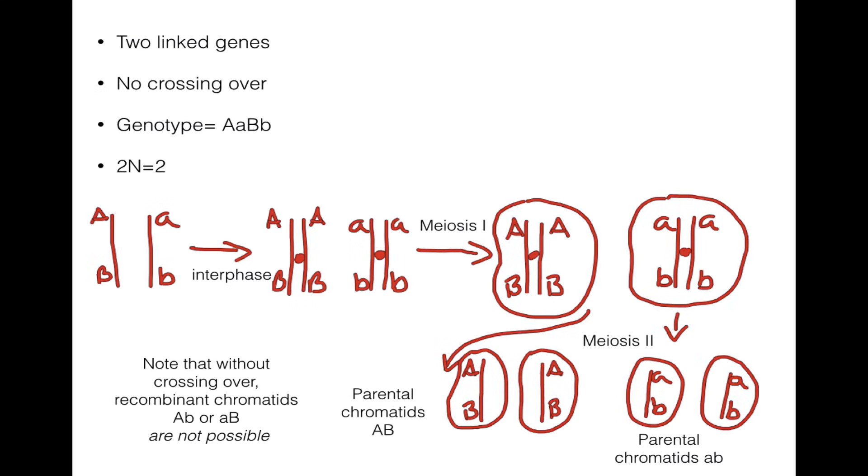All right, so let's look at a situation here where we have a chromosome with two linked genes. So this is a chromosome right here, and this is its homologous chromosome here. And the genotype for this organism is big A little a, big B little b, so it's a dihybrid. And because it has two chromosomes, we can say its 2N number is 2. So here's one of the chromosomes, and here's the other chromosome.